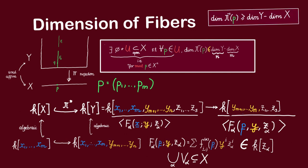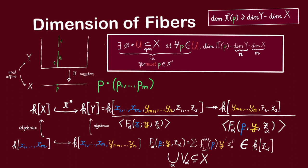This means that the dimension of the fiber has to be less than or equal to n − m. But since we already established in the previous video that this dimension must be at least equal to dimension of Y minus dimension of X, this implies that on U, the dimension of every fiber is actually equal to dimension of Y minus dimension of X.